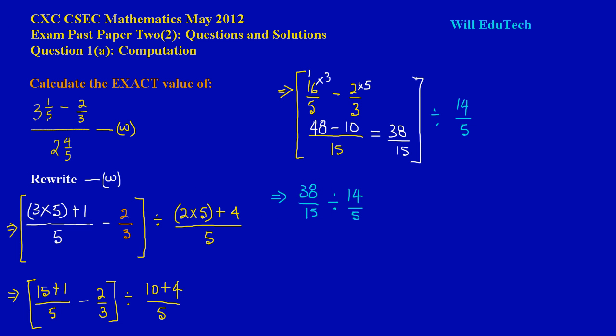So what that simply means is that the fraction at the front always remain the same. So I'm just going to simply take down my 38 upon 15. And then you're going to change the division sign to a multiplication sign, and then simply the fraction that is at the back, you're going to flip it or turn it upside down. So instead of having 14 upon 5, we're going to have a 5 upon 14.